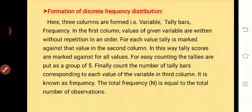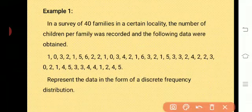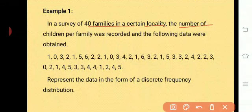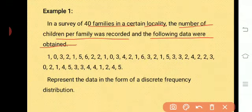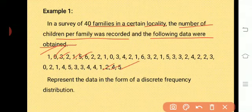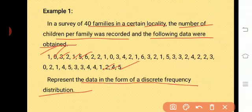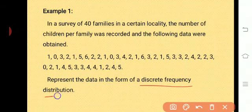Let's see the formation of discrete frequency distribution with an example. In a survey of 40 families in a certain locality, the number of children per family was recorded and the following data were obtained. The data includes values like 1, 0, 3, 2, 1, 5, and so on — 40 observations in total. We need to represent this data in the form of a discrete frequency distribution.